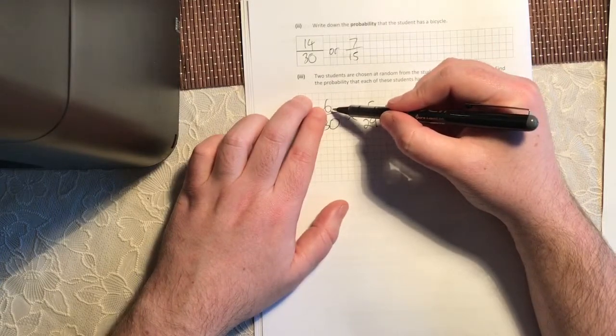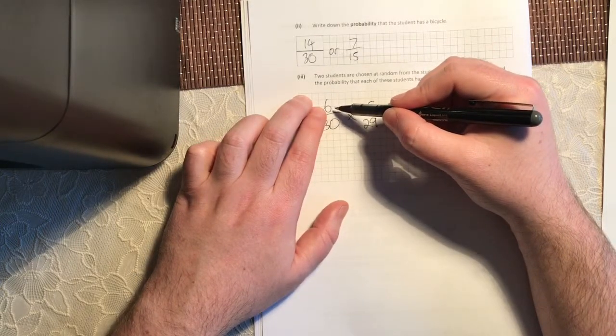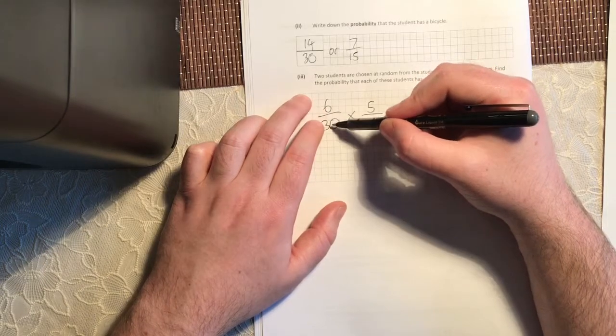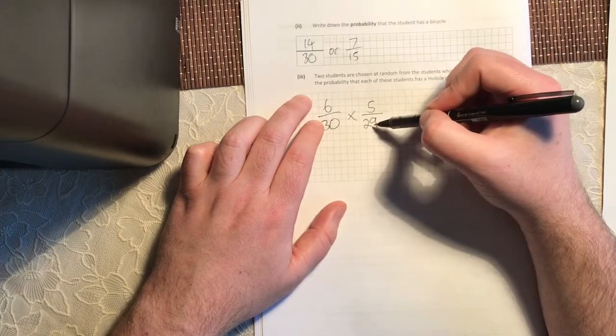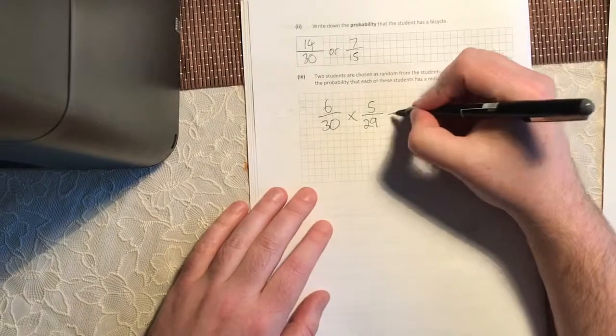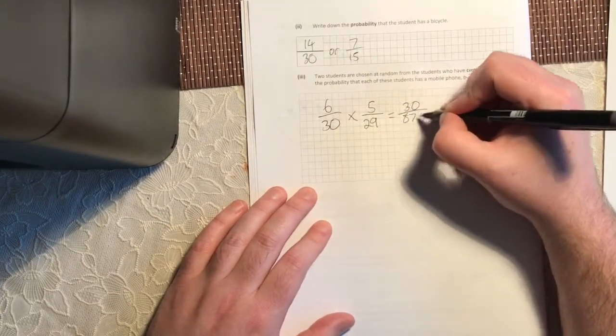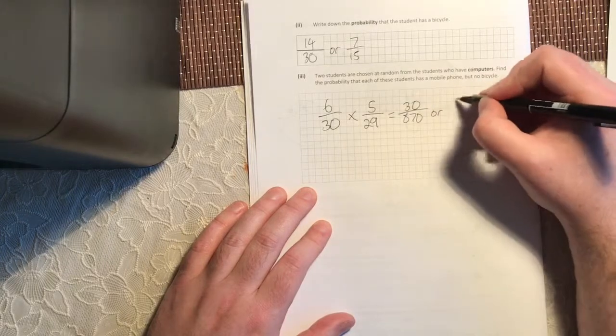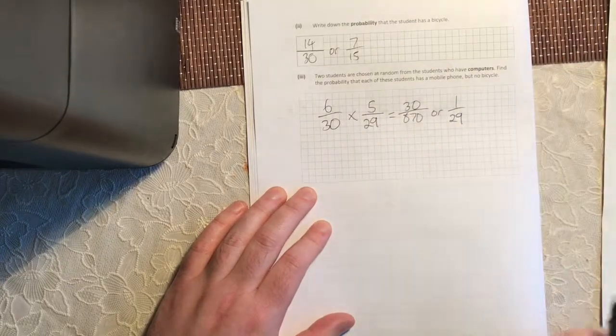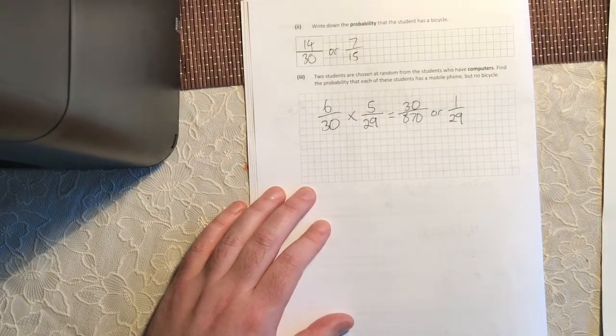Think about that now. There were 6 students. I've picked one of them. So that means this number is reduced by 1. But so is the total amount of students is reduced by 1. I've taken them out. So you end up with 30 over 870, or rationalize that to 1 over 29. And that's that question there.